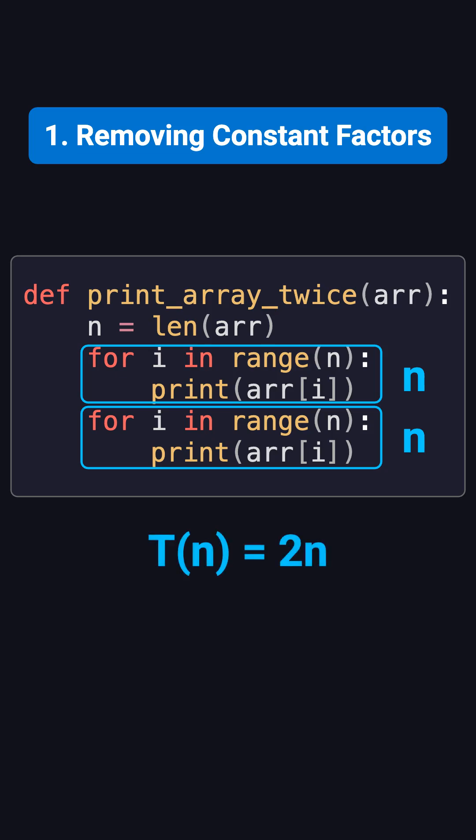Mathematically, we can say that T(n) equals 2 times n. But in Big O notation, we drop the constant 2 and just focus on the growth trend. So 2n becomes O(n).